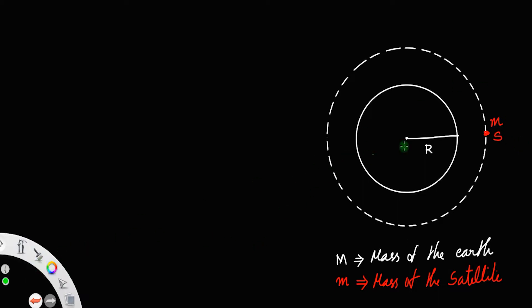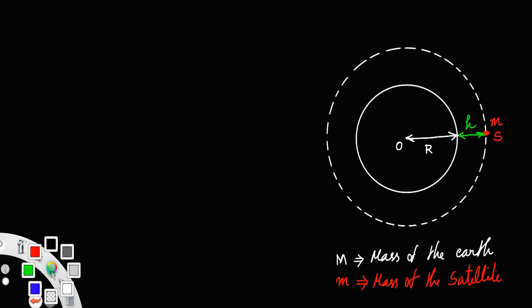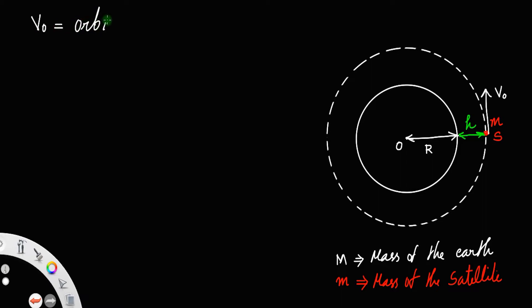Let this satellite be at a height h above the surface of the earth, so the distance from the center is R plus h. This orbit has a tangential velocity — that is, velocity perpendicular to the radius or tangential to its orbit — and that velocity is called the orbital velocity. We have to find an expression for the orbital velocity.